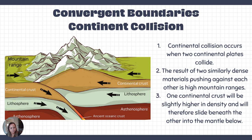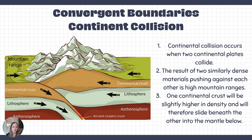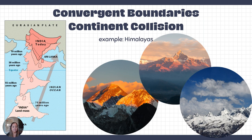In continental-continental collision, we have two pieces of crust that are similar in density — continental crust is made up of granite. When they run into each other, there is a lot of upward motion. One is slightly more dense and slides underneath the other, while gravity pulls it down into the mantle. This creates very high mountain ranges — the highest on Earth, like the Himalayas.